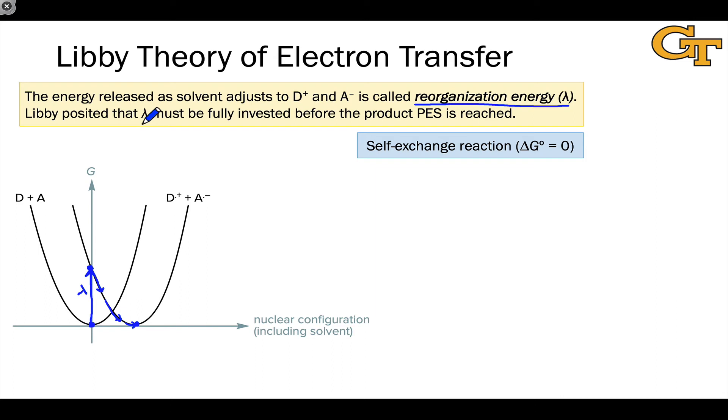Libby's idea was that we've got to fully invest that lambda amount of energy before we reach the product potential energy surface. We start with D and A and completely random solvent. When we reach this point, the electron transfer has occurred, but the solvent molecules have not yet reorganized themselves.